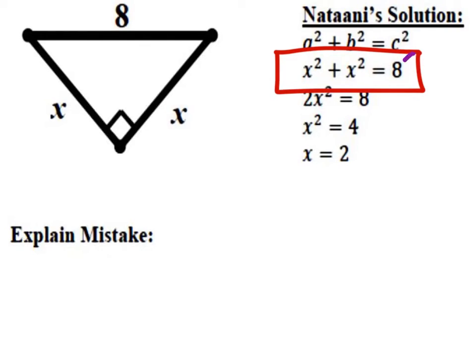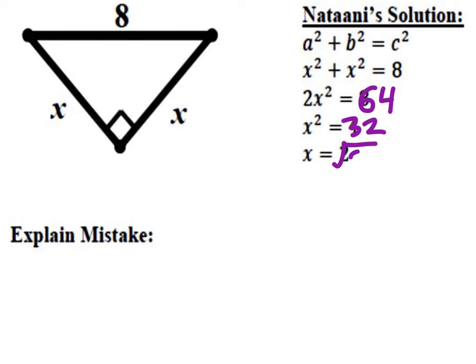He should have squared the 8, meaning if we continue this, we would have to replace the 8 with 64, and then when we divide by 2 we get 32, and so x is the square root of 32, which if we simplify, we would get 4 times the square root of 2, and that would be fine right there.